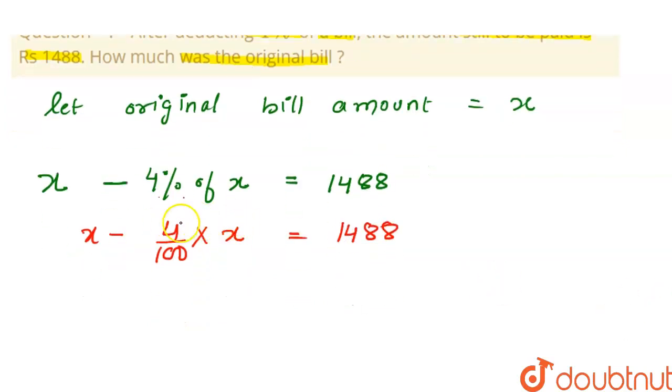This will become 4 upon 100 is 1 upon 25. So x minus x upon 25 is equals to 1488.